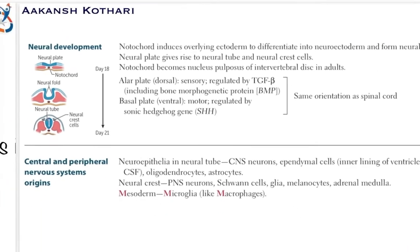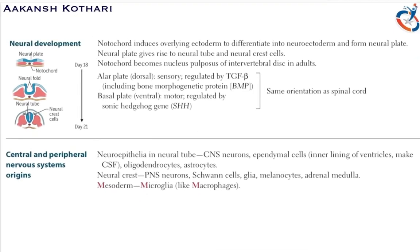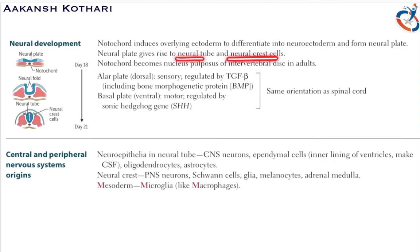The notochord induces the overlying ectoderm — the blue structure — to differentiate into the neuroectoderm and form the neural plate. The notochord sends signals to the overlying ectoderm to differentiate into neuroectoderm and form the neural plate. This neural plate then invaginates or folds to form the neural tube and neural crest cells. These portions turn into neural crest cells, whereas this invagination fuses and forms the neural tube.